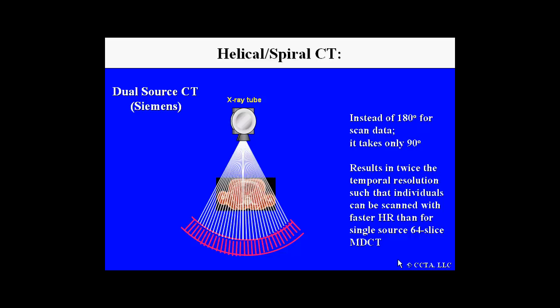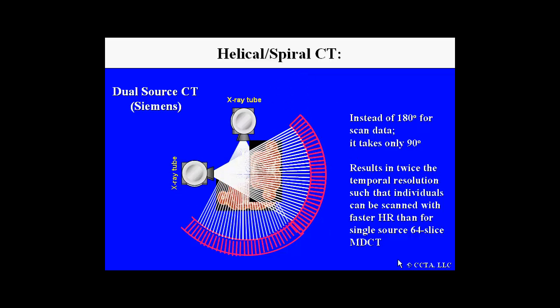Improvements in temporal resolution can be accomplished using the Siemens dual-source scanner, which results in twice the temporal resolution, such that it only takes a 90-degree rotation of each of the two heads, thus producing the individual 180 degrees required for scan reconstruction.